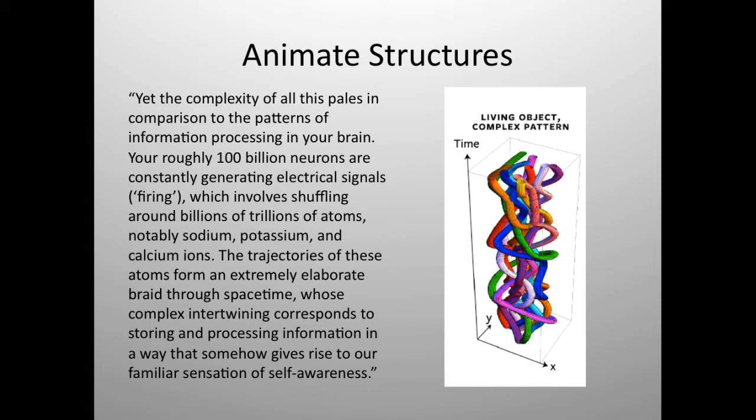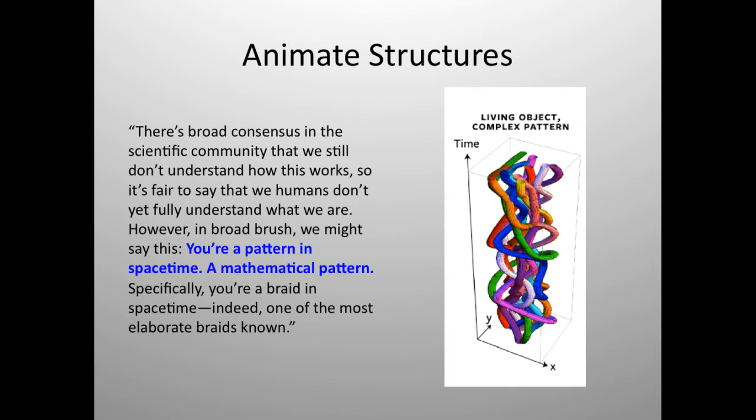Roughly 100 billion neurons are constantly generating electrical signals, firing, which involves shuffling around billions of trillions of atoms, notably sodium, potassium, and calcium ions. The trajectories of these atoms form an extremely elaborate braid through space-time, whose complex intertwining corresponds to storing and processing information in a way that somehow gives rise to our familiar sensation of self-awareness. There's broad consensus in the scientific community that we still don't understand how this works, so it's fair to say that we humans don't yet fully understand what we are.